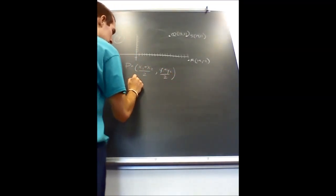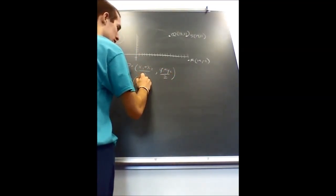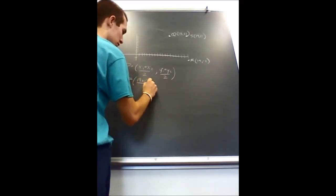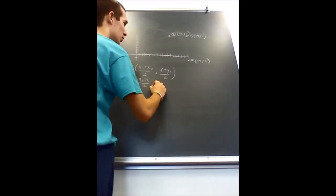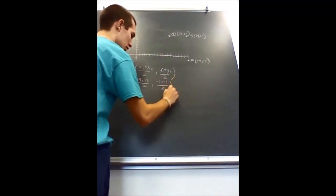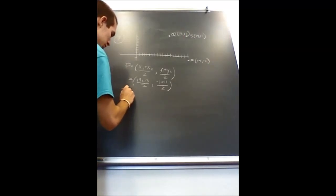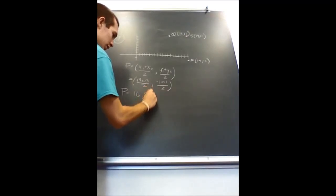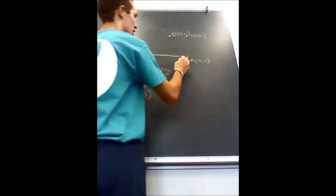which would mean P equals ((19 + 13)/2, (-1 + 11)/2), which means point P, the center of the circle, is (16, 5). Then I would plot that.